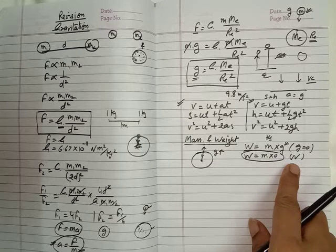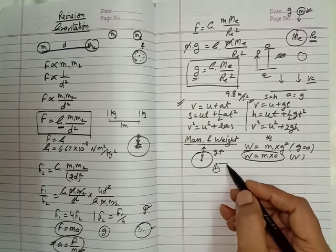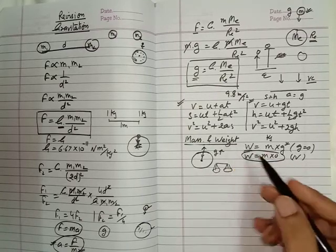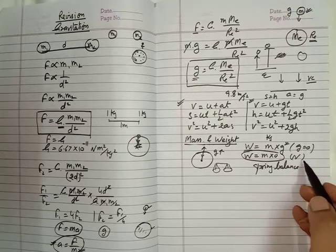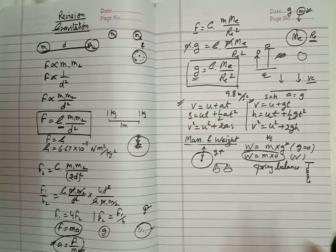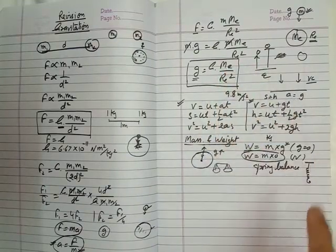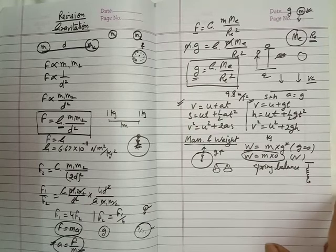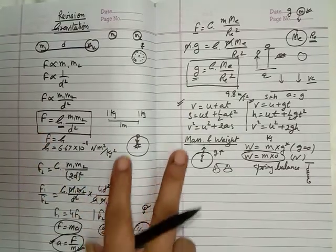We can find the value of mass by using a beam balance. If we want to find the value of weight, we have to use a spring balance. Spring balance is generally used for finding the weight of an object. By changing the value of radius or mass, the value of weight also changes. There are some numericals based on this which I have explained in previous videos, so you can use your previous videos to understand the numericals based on weight, mass and the force of attraction between two objects.